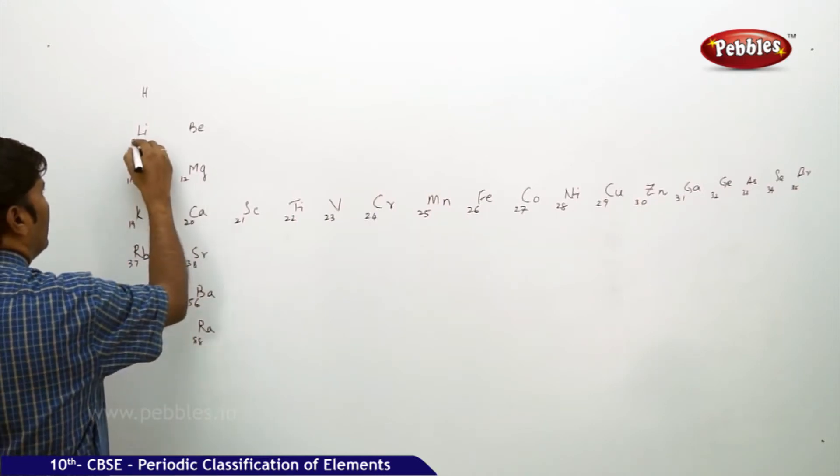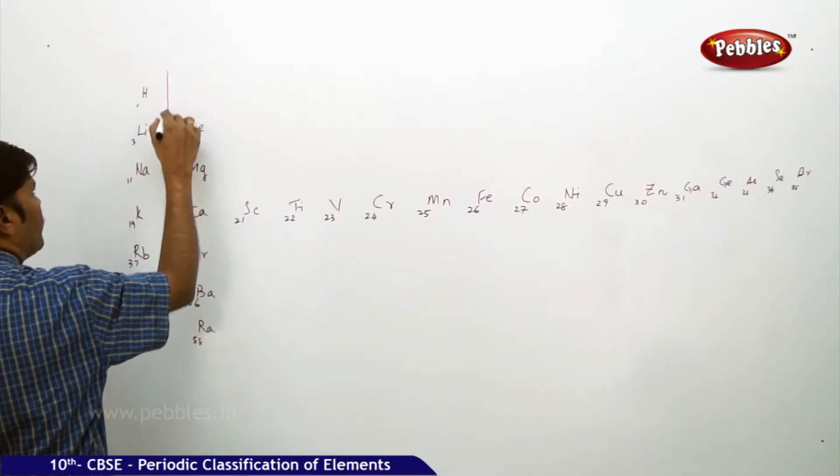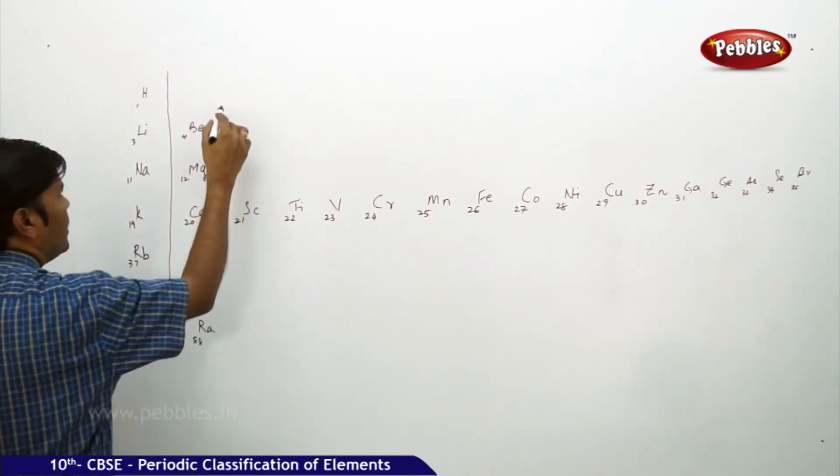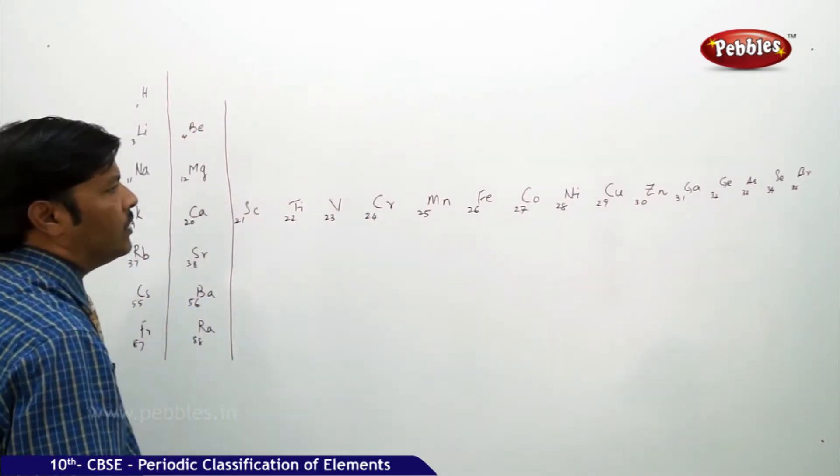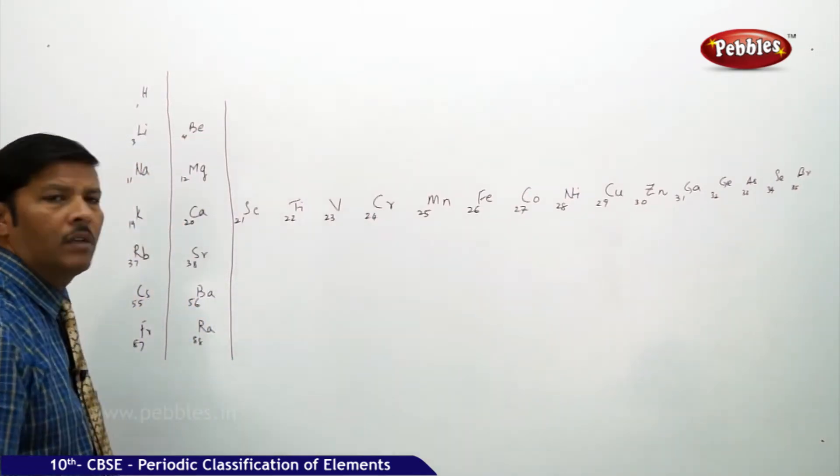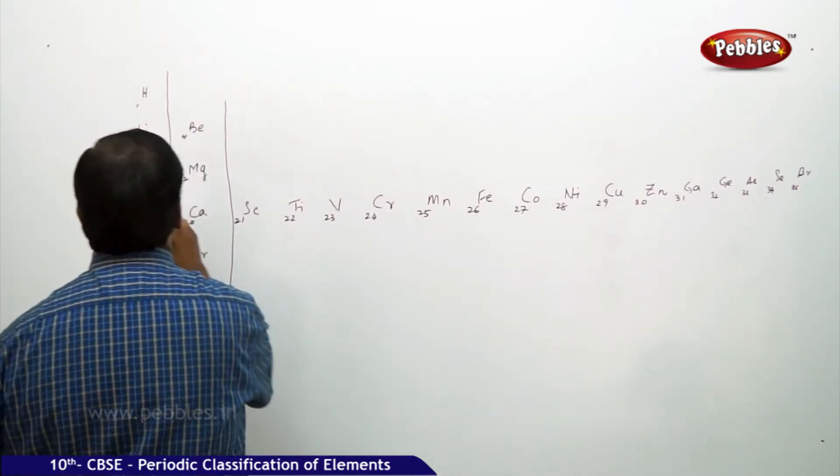11 atomic number, 12 atomic, 3, 4, and this is 1. What we're trying to understand here is a very simple method. Practice always makes you perfect.